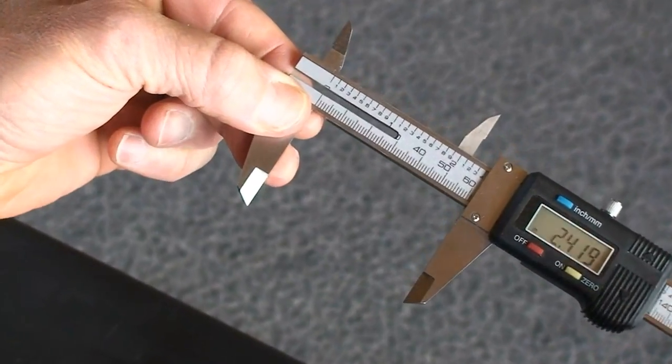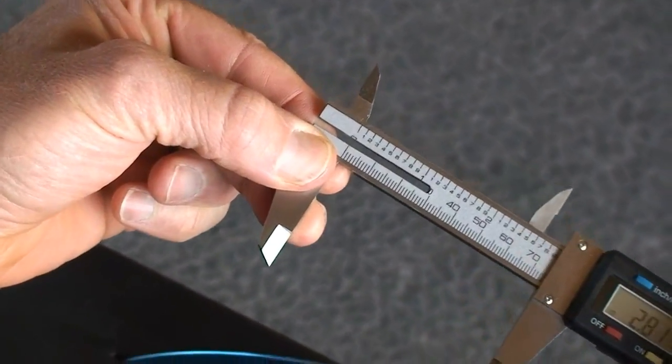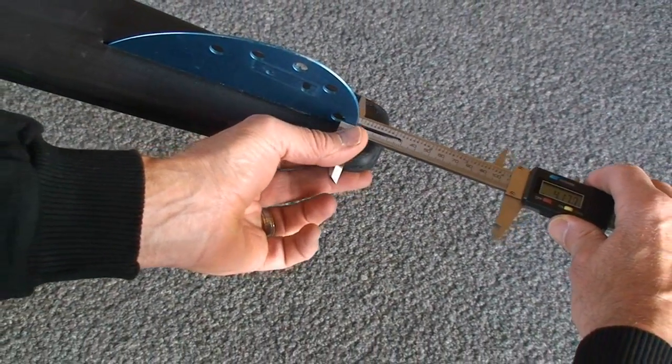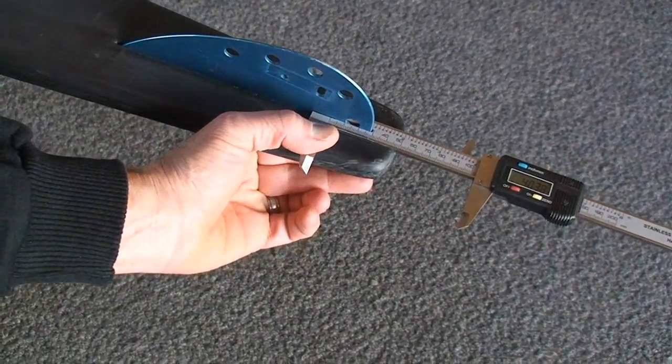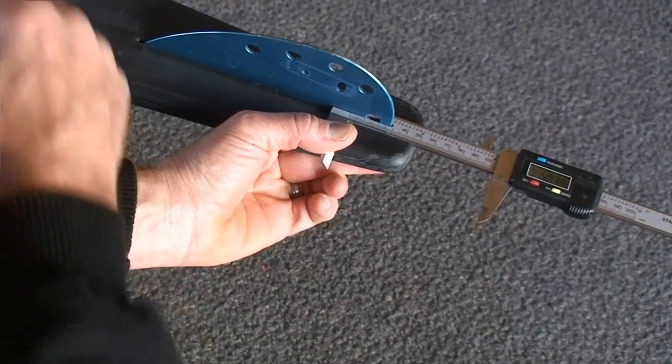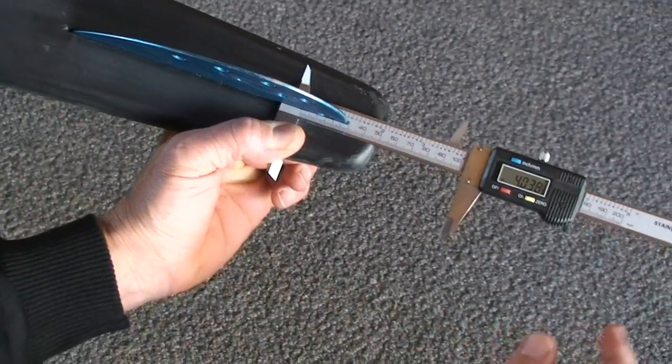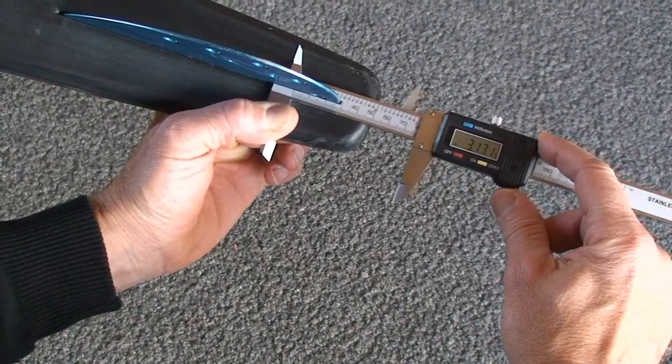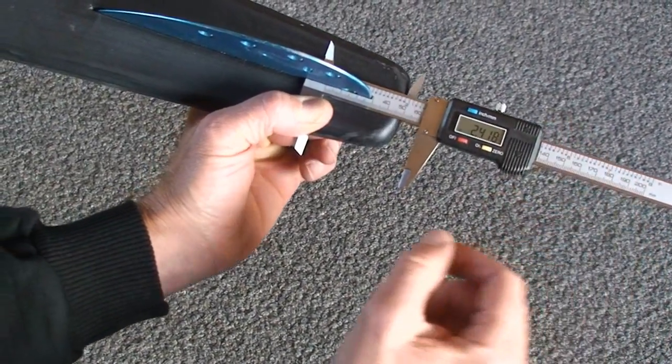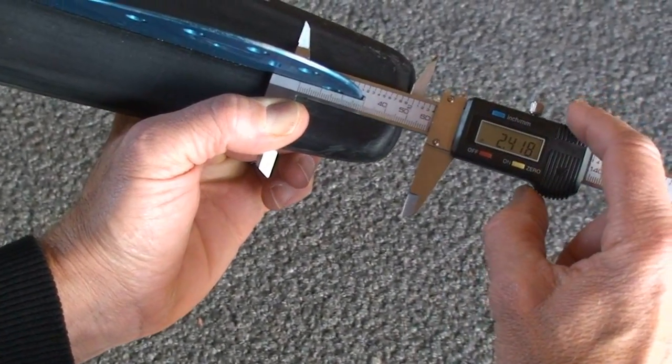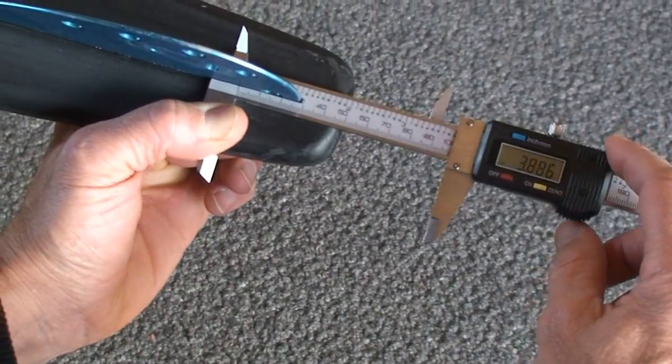What this does is allow us to accurately take the distance-from-tail measurement in digital format. This is typically one of the hardest measurements to record, and as you can see, I can just push this into the tail and get an accurate measurement each and every time. This is accurate to half a thousandth of an inch.